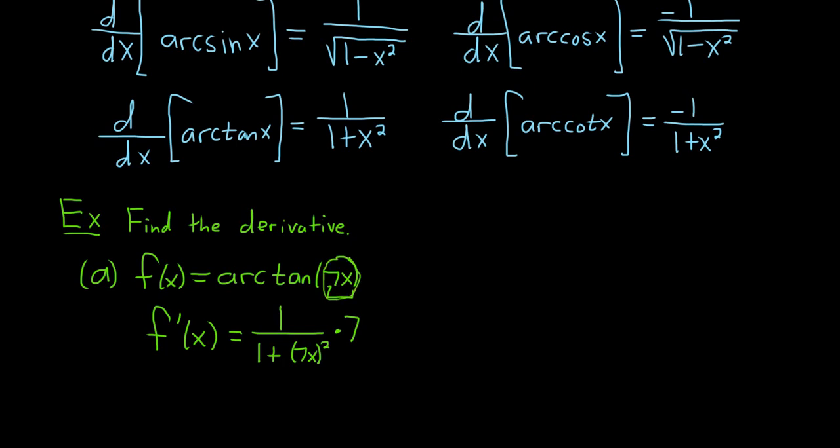This equals 7 over 1 plus 49x². Squaring this, you square the 7, you get 49, square the x, you get x². We're doing some calculus. That is the final answer.